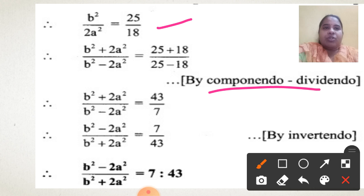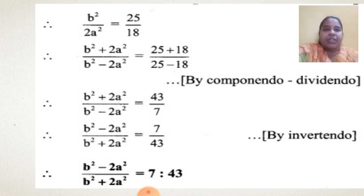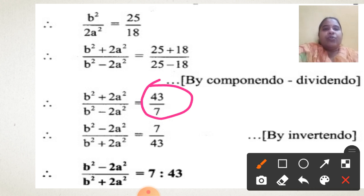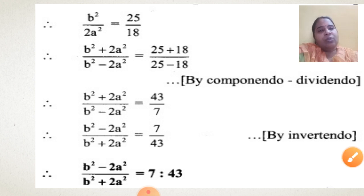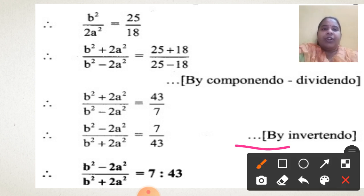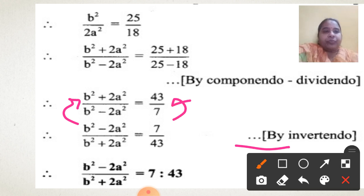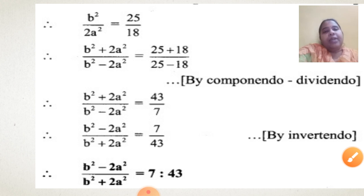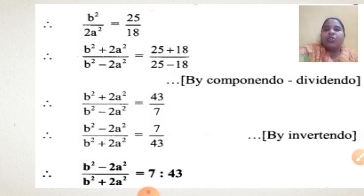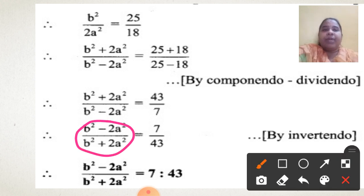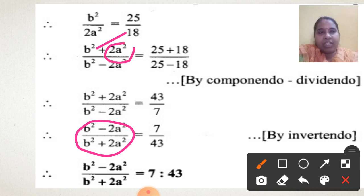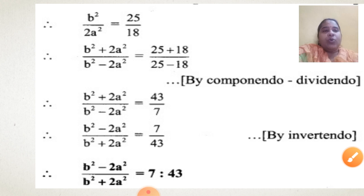The question has plus and minus form, so use Componendo-Dividendo. This gives b² + 2a² over b² - 2a² equal to 25+18 over 25-18, which is 43 upon 7. But the question has minus above and plus below, so by Invertendo, invert it. The final answer is b² minus 2a² upon b² plus 2a² = 7 is to 43. The steps are decided by looking at the question: square because of a² and b², invert because it starts with b², multiply by 1/2 because of the coefficient.